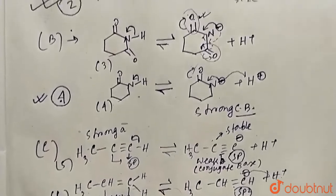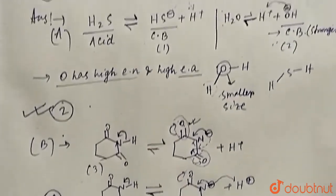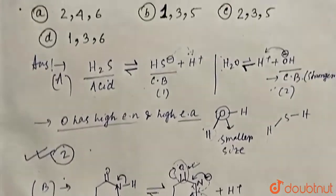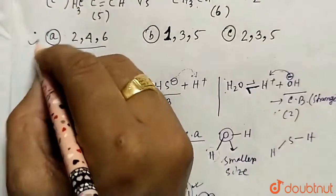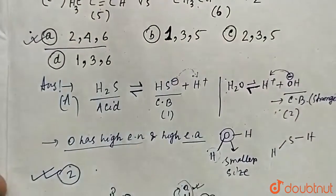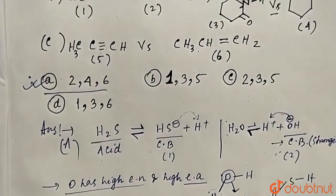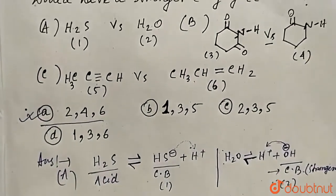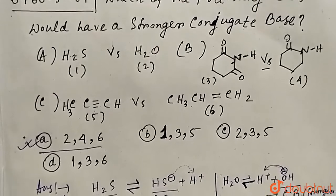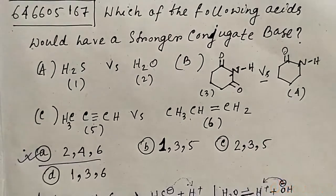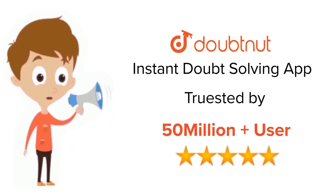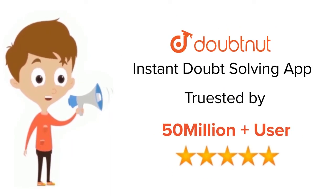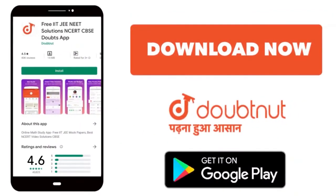So our answer is compounds 2, 4, and 6 are the stronger conjugate bases. Option A (2, 4, 6) is the correct answer. Thank you all. For class 6 to 12, IIT-JEE and NEET level — trusted by more than 5 crore students — download DoubtNet today.